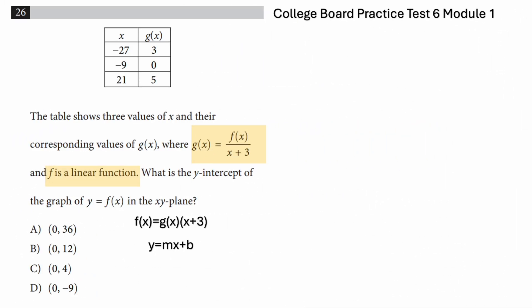So the first thing I'm going to do here is add another column for f(x). Now that we know f(x) = g(x) times (x + 3), we can just plug in the value of x and g(x) to get the corresponding f(x). Since f is a linear function, we need just two points to graph. However, I'm going to find f(x) for all three x values.